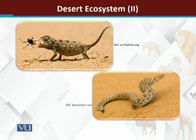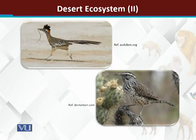Among reptiles, there are different types of lizards and different types of snakes — snakes and lizards of different varieties and species. Some snakes are very poisonous. Among the birds there are roadrunners, cactus wrens, different species of owls, and vultures are also reported from the deserts.